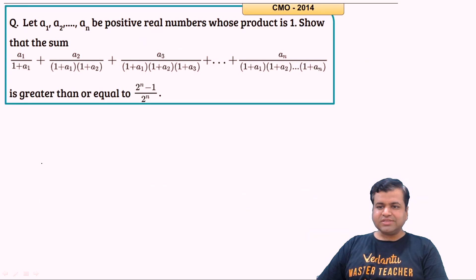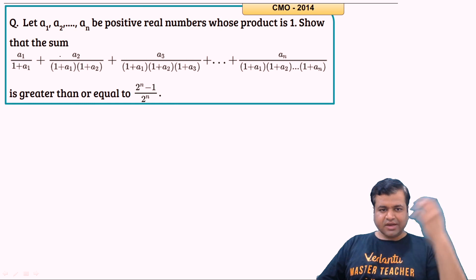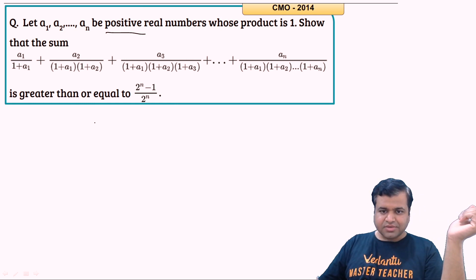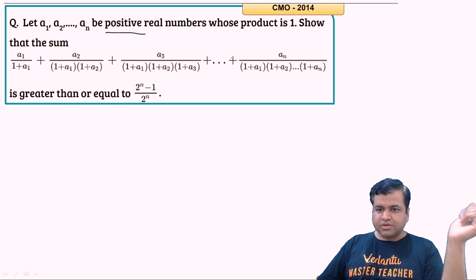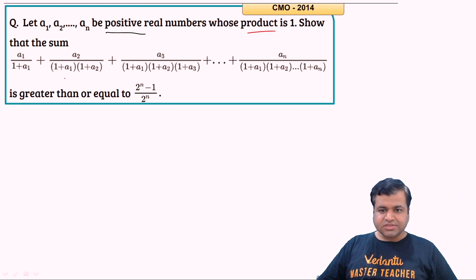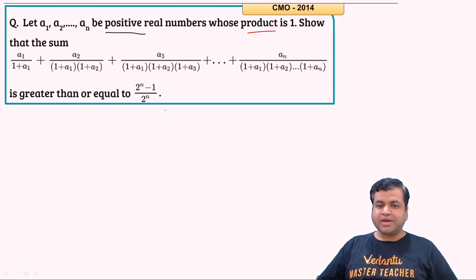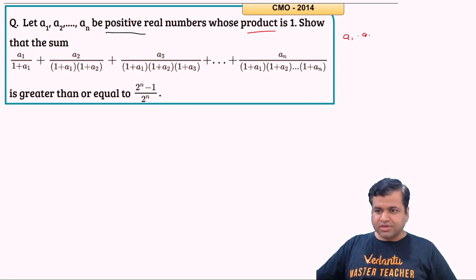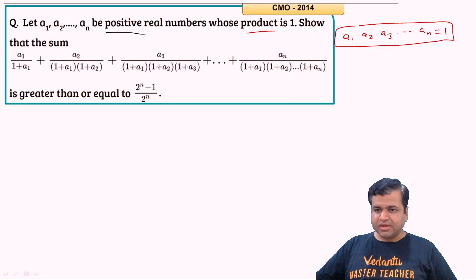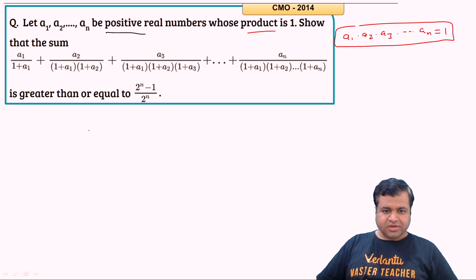Let's start the session. This is from the CMO 2014 exam. The question says: let A1, A2, ..., AN be positive real numbers whose product is 1. Show that the sum of A_k/(1 + A_k) is greater than or equal to (2^n − 1)/2^n. We are given A1 × A2 × A3 × ... × AN = 1.